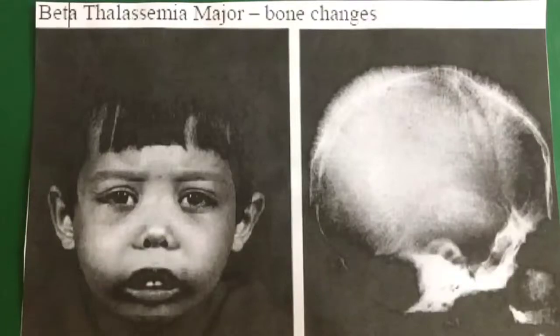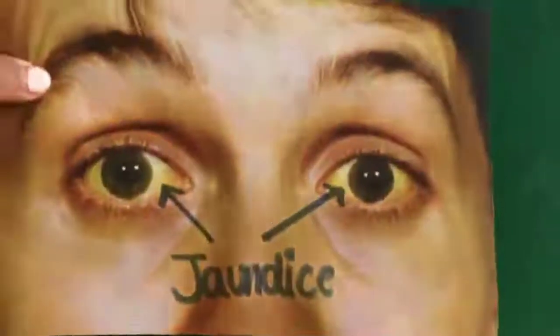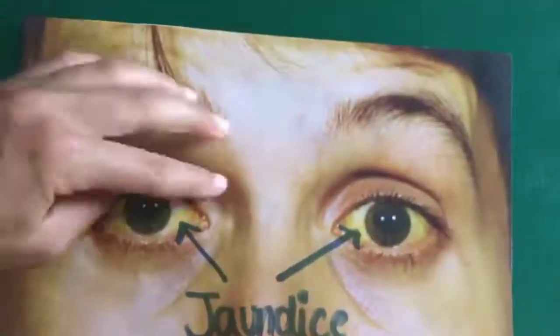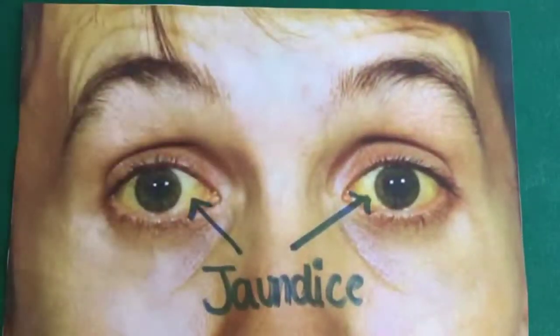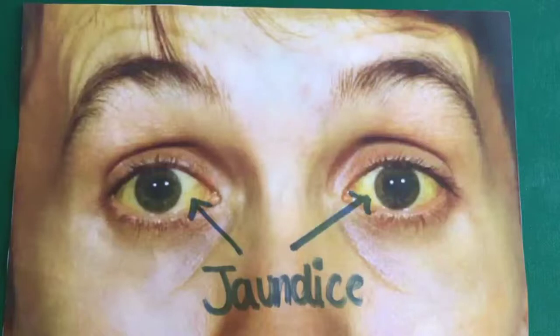The second type of thalassemia is thalassemia intermedia. Symptoms may come about in early childhood or later in life. People affected will have mild to moderate anemia, slow growth and bone defects. It's important to stress that people with beta-plus and beta-zero thalassemia have been diagnosed with thalassemia major and intermedia.